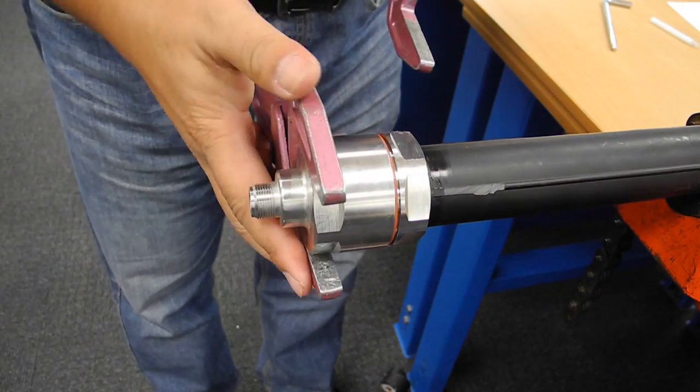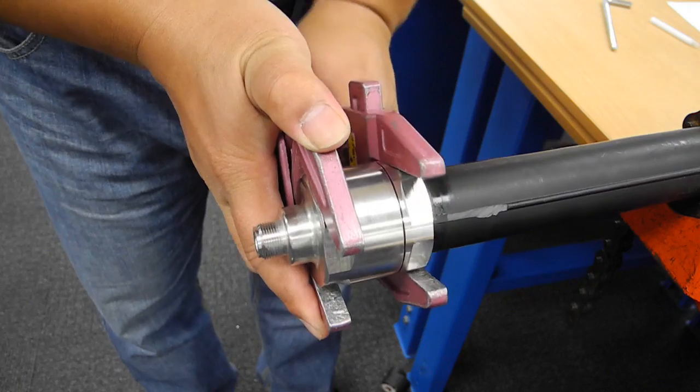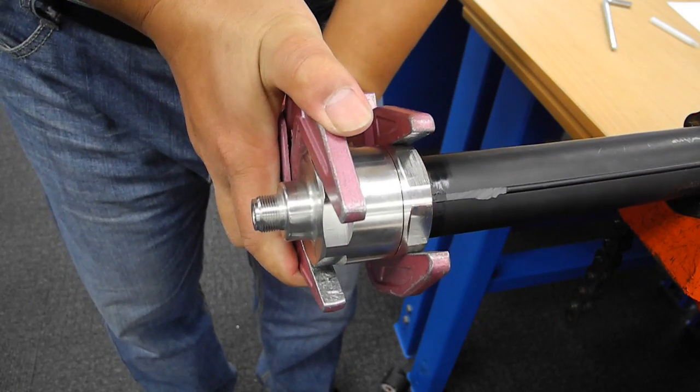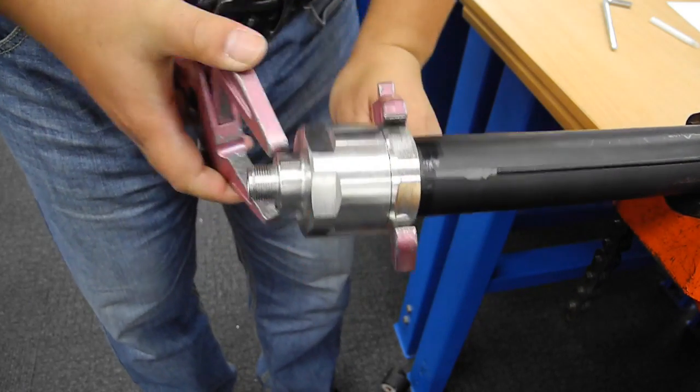Using two adjustable wrenches, hold the connector body in place while tightening the clamping nut. Be careful not to over tighten the assembly.